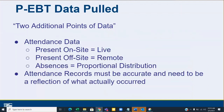The second data point is attendance. Present on-site equals live instruction; present off-site equals remote. Absences are proportionally distributed — and that has been a large part of discussion. Attendance records must be accurate and must reflect what actually occurred. If you're not sure what we mean by proportional distribution of absences, we'll explain that in more detail.